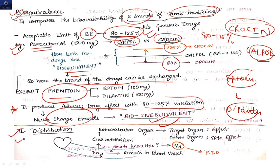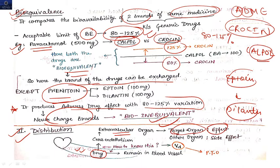We have discussed absorption as part of ADME; now coming to distribution. How is the drug distributed? The drug crosses the endothelium and goes to extravascular organs, where it causes its intended effect. Drug reaching the target organ produces the desired effect; drug reaching other organs produces side effects. Some drug also remains inside the blood vessels.